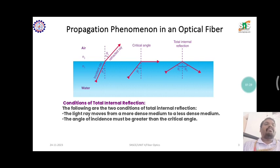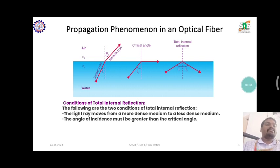In optical fiber, there are some propagation phenomena such as refracted waves and reflection. Between the gap of the critical angle, total internal reflection occurs. The two conditions of total internal reflection are: first, the light ray must move from a more dense medium to a less dense medium.